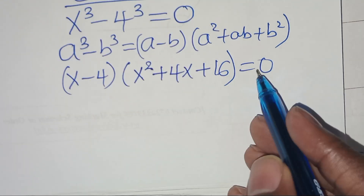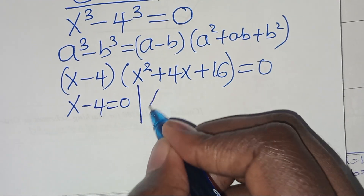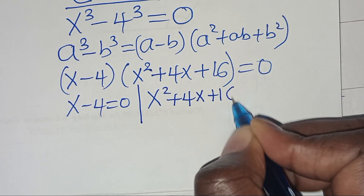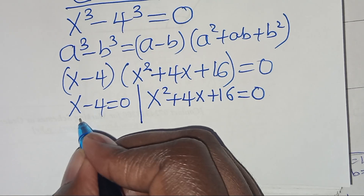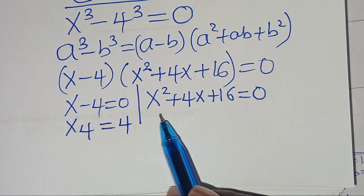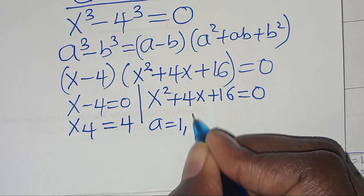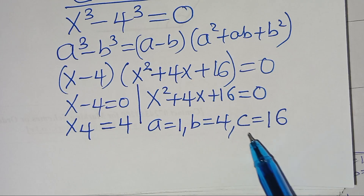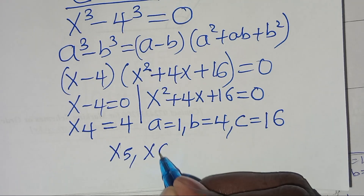So we have two parts: the first part is x - 4 = 0, giving x₄ = 4. The second part is x² + 4x + 16 = 0, which is a quadratic equation where a = 1, b = 4, and c = 16. Let's apply the quadratic formula to solve for x₅ and x₆.